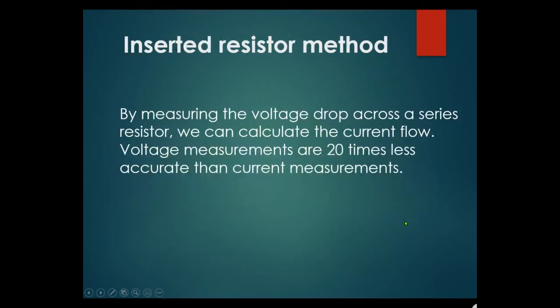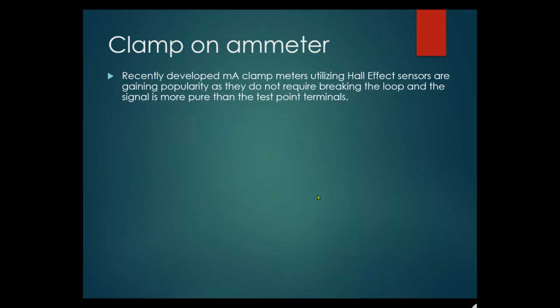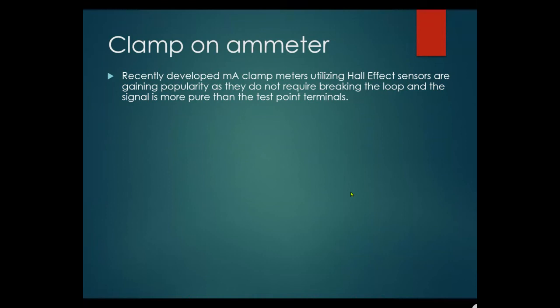By measuring the voltage drop across a series resistor, you can calculate current flow, but voltage measurements are 20 times less accurate than current measurements. A newer tool is the milliamp clamp-on ammeter utilizing the Hall effect — gaining popularity because it does not require breaking the loop and gives a more pure signal than test point terminals. Previously, sharp terminals were used to pierce wire insulation to test voltage drops, but that damages the insulation.